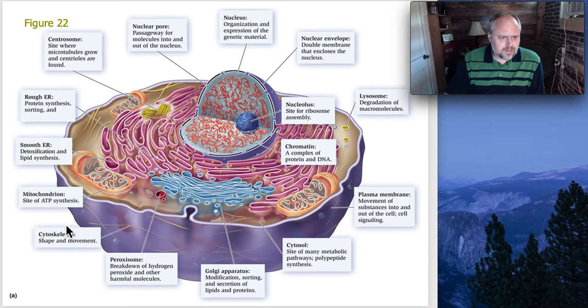And the ones that we're going to spend most of our time on are going to be this one, the cytoskeleton. We'll talk about the cytosol and the plasma membrane. We'll talk about the nucleus and all of its components—so nuclear pore, nucleus, nuclear envelope, nucleolus and chromatin or the chromosome.